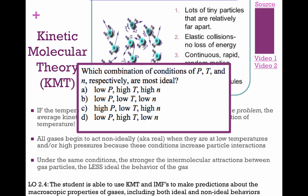Multiple choice: which combination of pressure, temperature, and moles is most ideal? Most ideal means fewest interactions between gas molecules — you want them moving really fast but not interacting. Motion is based on temperature, so you want high temperature, which eliminates B and C. You also want low pressure, and fewer moles to reduce collisions. Most ideal: low pressure, high temperature, and low number of moles.